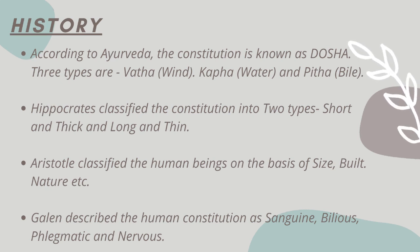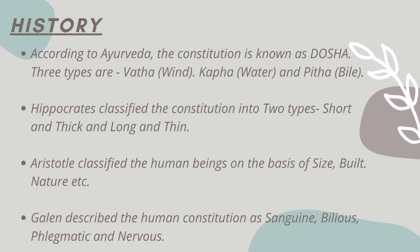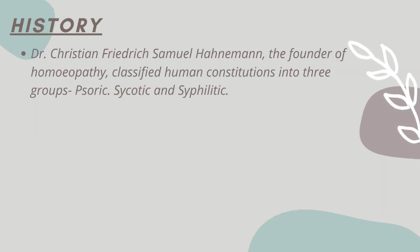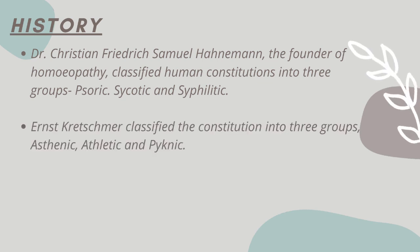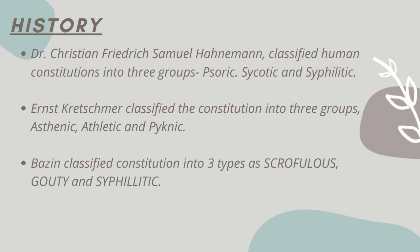Galen described the human constitution as sanguine, bilious, phlegmatic, and nervous. Dr. Samuel Hahnemann, the founder of homeopathy, classified human constitutions into three groups: suric, psychotic, and syphilitic. Ernst Kretschmer classified the constitution into three groups: aesthetic, athletic, and picnic. The Zahn classified constitution into three types as scrofulous, gouty, and syphilitic.